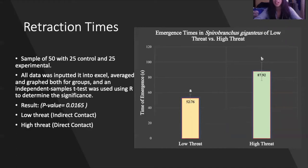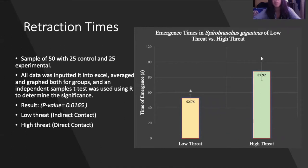We got a significant p-value of 0.01. At the individual level there was great variation in the study. For the control (low threat), the fastest worm emerged at 12 seconds whereas the slowest was at 100 seconds. For the high threat, the fastest worm emerged at 12 seconds and the slowest emerged at 249 seconds. This test was regarding the emergence times and animal behavior.